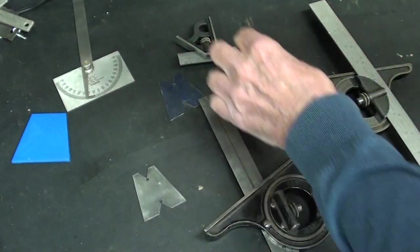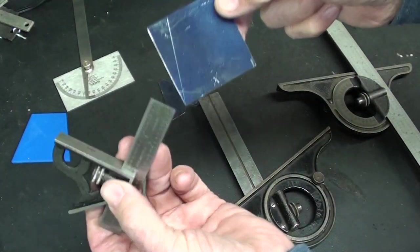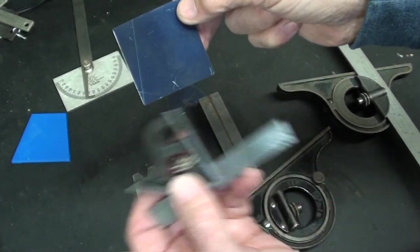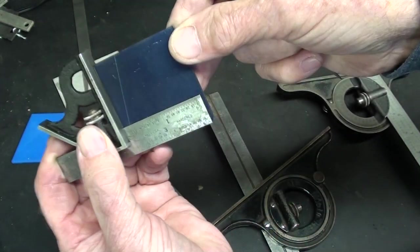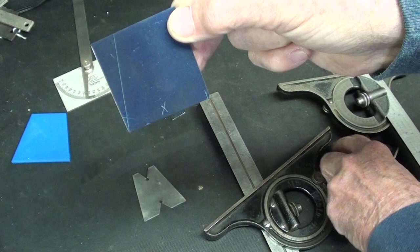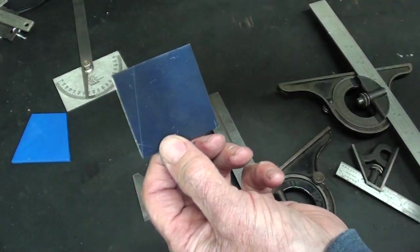So there's the 15 degree line. And then I've already taken my Starrett combination square, because this is 2 inches wide. And I've laid out that tiny little line right on the corner. I probably should have started with a piece slightly bigger.